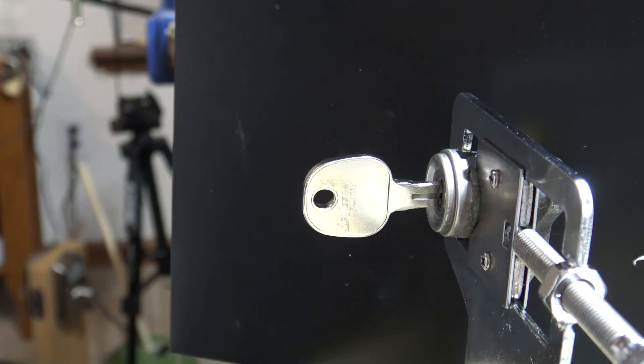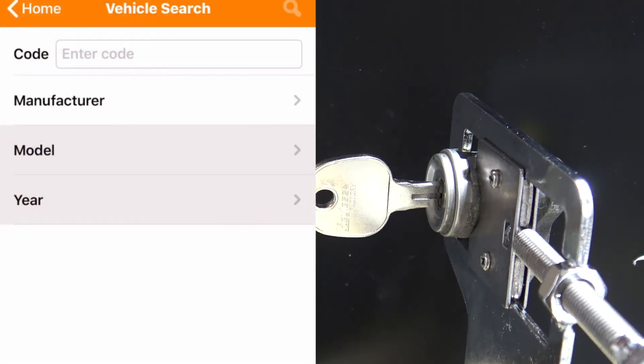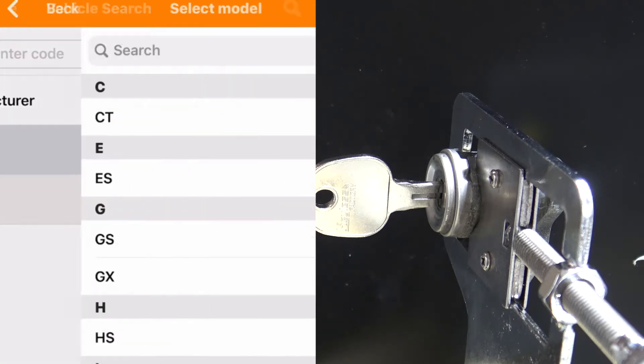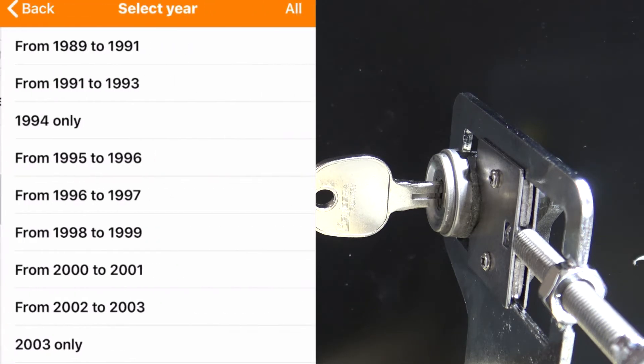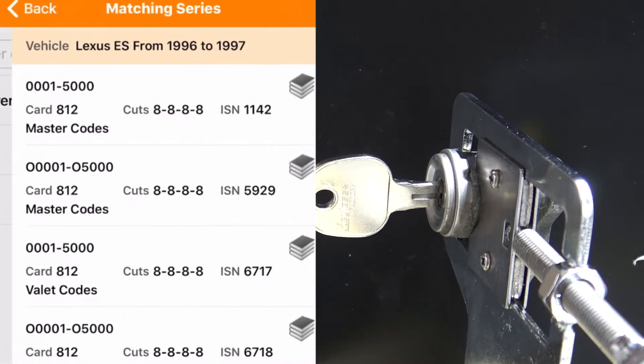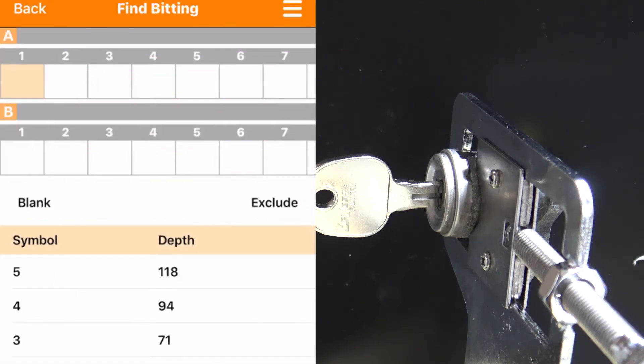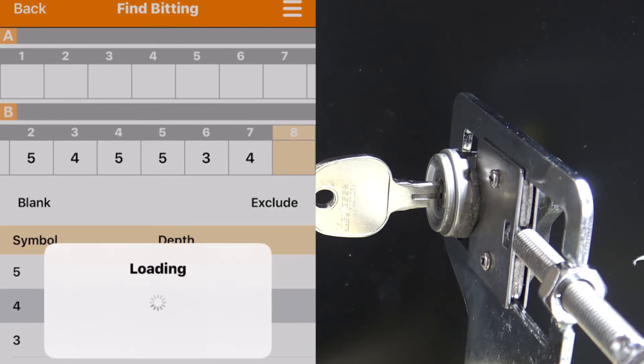Alright, we got Instacode pulled up here and we're going to go to Vehicle Manufacturer, we're looking at a Lexus, model ES, just select all of them, 96-97, search. And this first one is the code series for this vehicle that we're working with. You're going to go to Find Bitting, and I'm going to just not even worry about the A side. And on the B side, punch in the seven numbers that we have here: 3, 5, 4, 5, 5, 3, 4.